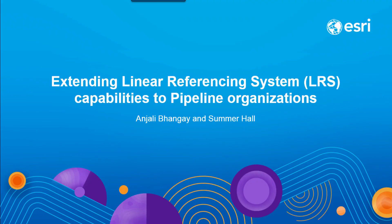Does everyone here feel pretty comfortable with linear referencing concepts and terminology? For those of you who don't know what linear referencing is, it is a method for finding locations using relative position along a linear feature — instead of using lat-long or coordinates. That linear feature is called a route, and anything that describes or falls on a route is called an event. Just two terminologies to be aware of throughout this session: route and event.